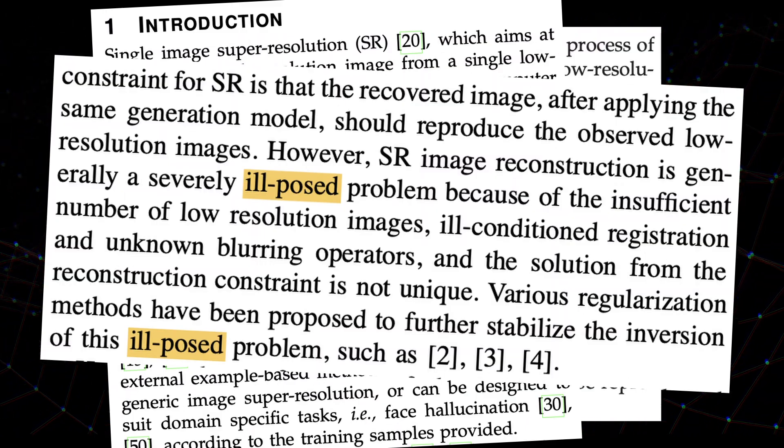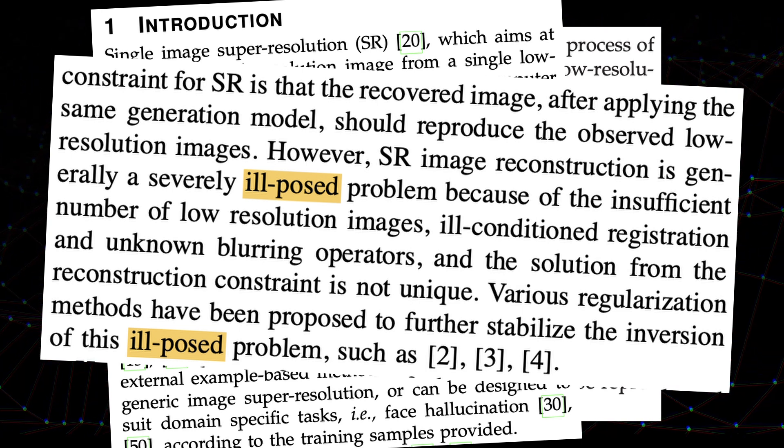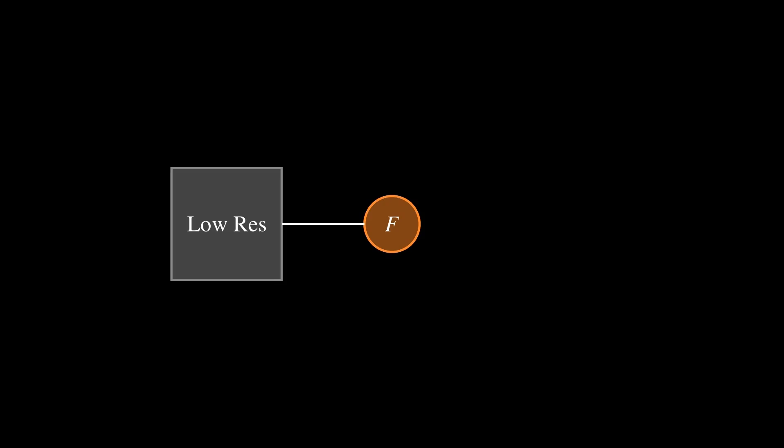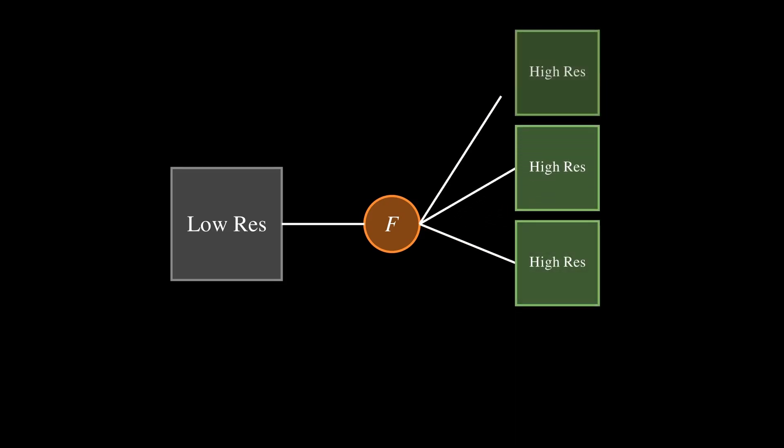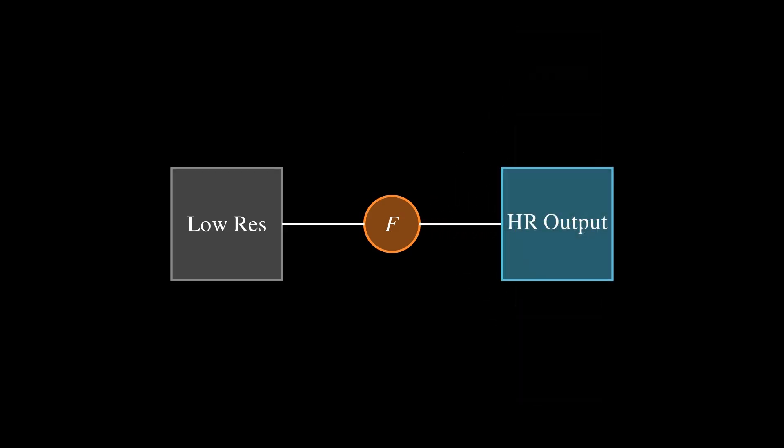This question leads to a common theme discussed in multiple papers that I read through, which is that the problem of super-resolution is ill-posed by nature. My interpretation of this is that since no perfect reconstruction model F usually exists, there are essentially an infinite number of possible reconstructions, each of which has a different level of quality, or resemblance to the ground-truth high-resolution image. Our job, then, is to do our best to create a model that generates as convincing of a result as possible based on some scoring metric.